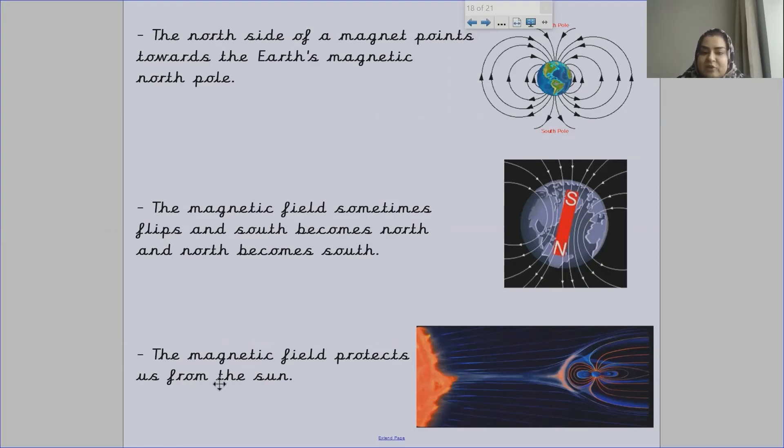The magnetic field protects us from the sun. The reason Earth is a huge magnet and has a magnetic field is so that us people, us humans, are protected from the rays of the sun.